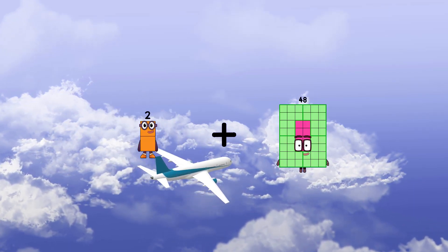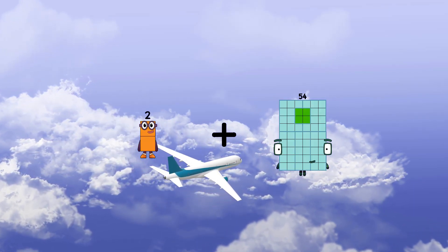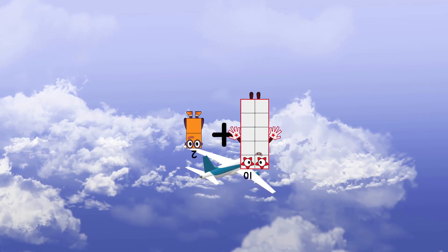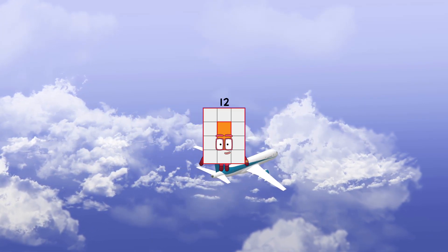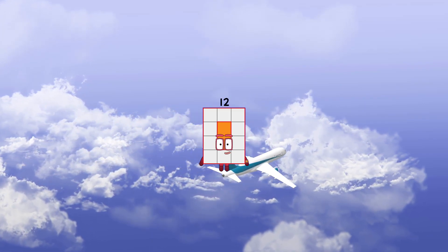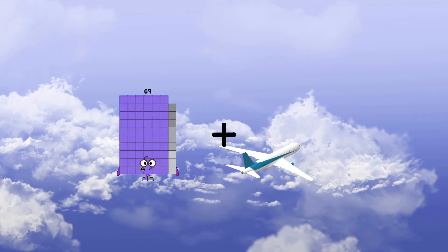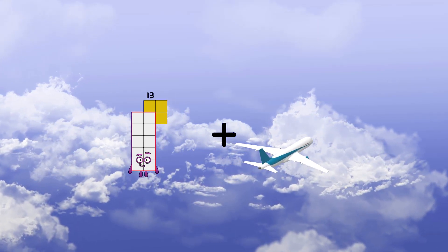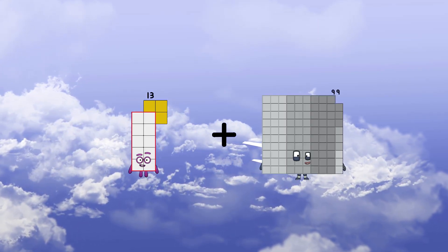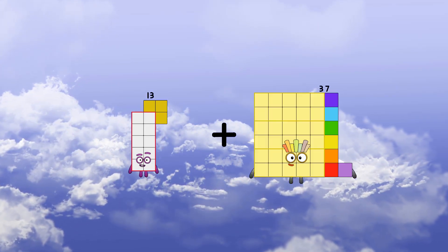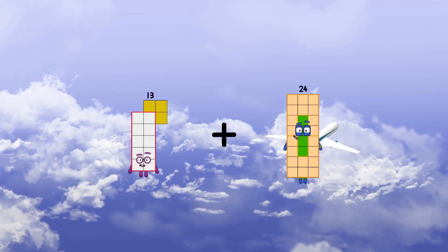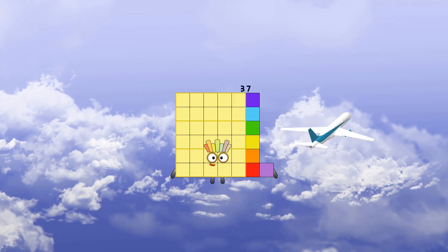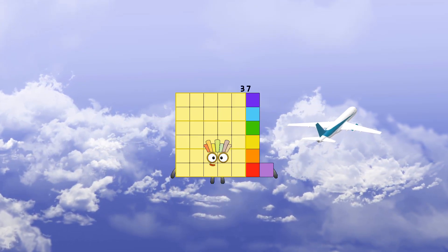2 plus 10 equals 12. 13 plus 24 equals 37.